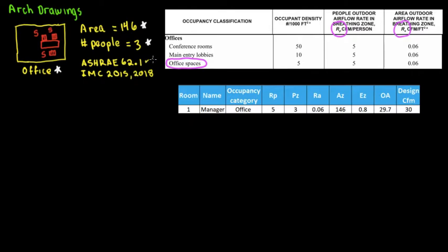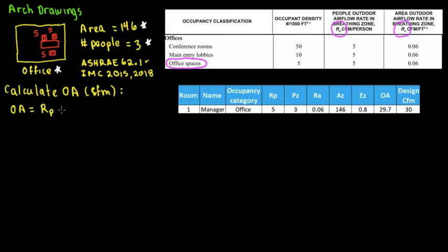So based on ASHRAE 62.1, what is the formula? We need to calculate the CFM — cubic feet per minute — of outside air. The ASHRAE 62.1 formula is: Outside Air = (RP · PZ + RA · AZ) / EZ. That's the formula. Outside air is going to be equal to that.